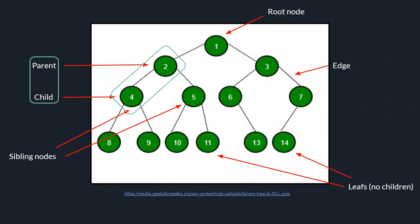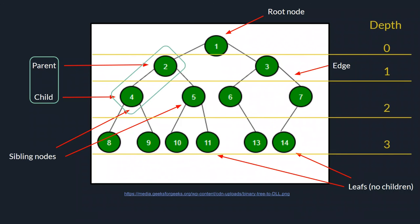A leaf in a binary tree is a node that has no children. The depth of a node is the number of edges you have to take to get from the root to that node. For the root node, you don't take any edges, so its depth is zero. Nodes two and three require one edge from the root, so they have a depth of one. As you keep going down, the depth is just the number of edges from the root to the node you're looking at.